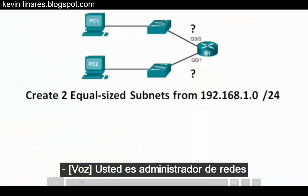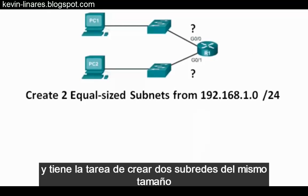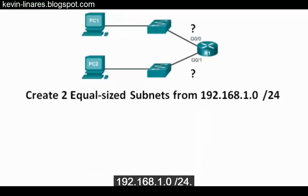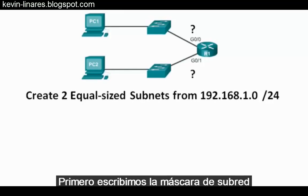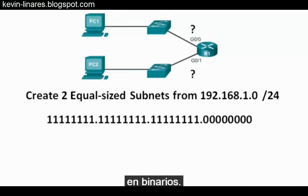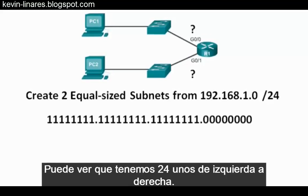You are a network administrator and you're tasked with creating two equal-sized subnets from the network address 192.168.1.0/24. The first thing we'll do is write out the subnet mask in binary. You can see we have 24 ones going from left to right.